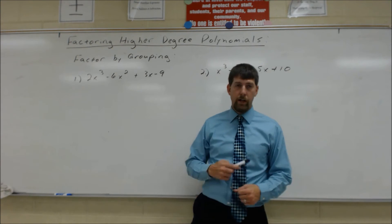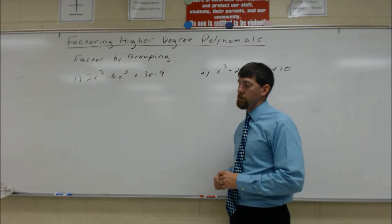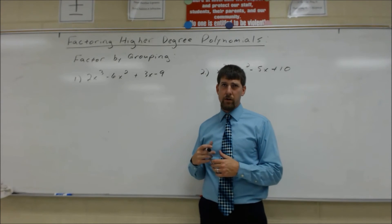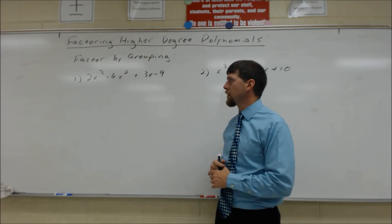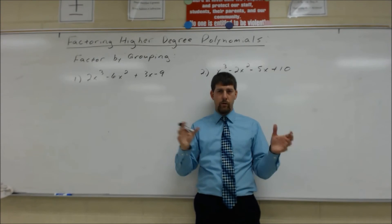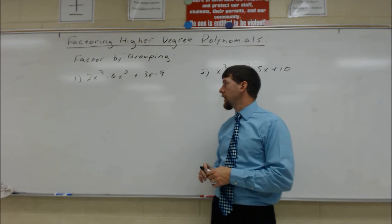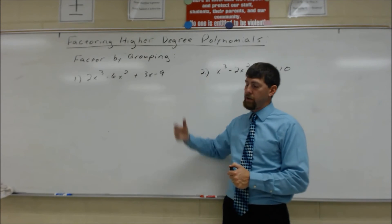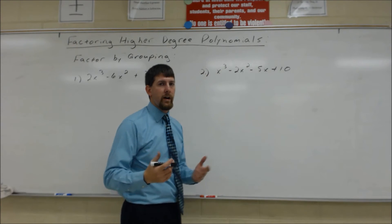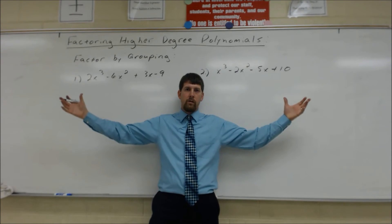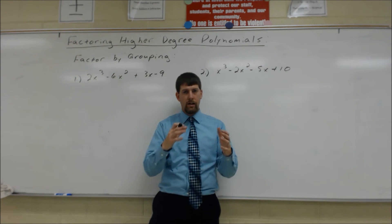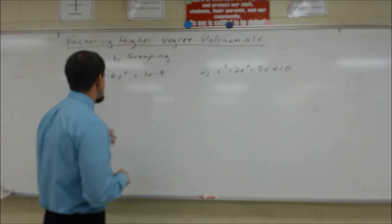The last type of factorization for higher degree polynomials is factoring by grouping. We tend to use this when we have an even number of terms — typically four terms or six terms. What factoring by grouping does is take a large polynomial and break it into smaller polynomials by repeatedly applying common factor until the expression is completely factored.